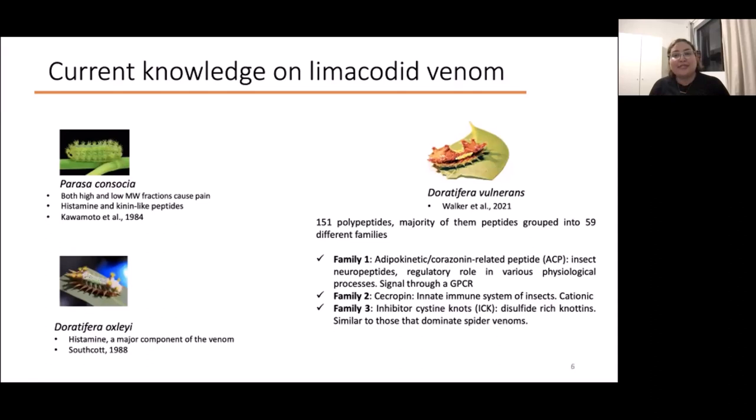They had 151 polypeptides grouped into 59 different families. The majority of them are adipokinetic corazonin-related peptides, which are insect neuropeptides, and sacropine-like peptides, which are part of the innate immune system of insects. I'm going to talk about them a bit more now. Then there are ICKs, which are similar to the ones that dominate spider venoms.